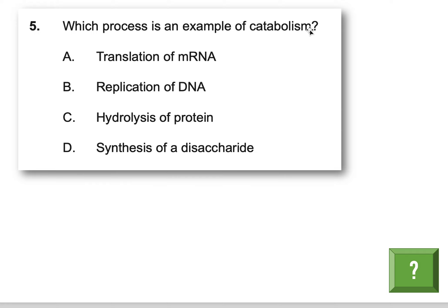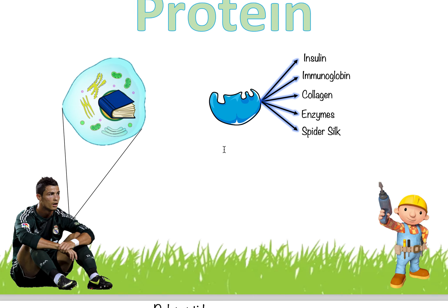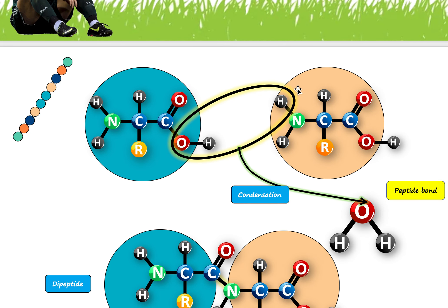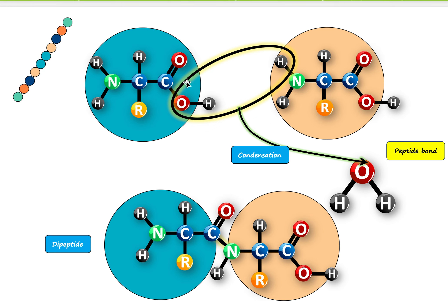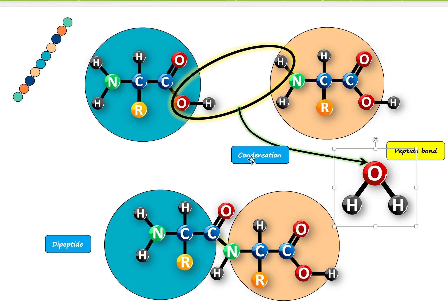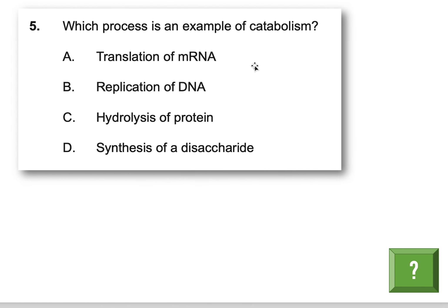Last question: which process is an example of catabolism? You need to know two words: catabolism and anabolism. Think of catabolism like a cat — cats destroy things, your couch, your curtains. So catabolism is the process of breaking apart molecules. Anabolism is the process of forming molecules. When you link two amino acids together that's anabolism, specifically condensation because water is lost. The opposite — breaking the two amino acids apart — is catabolism, and in this case the specific type is hydrolysis because water is used to split them.